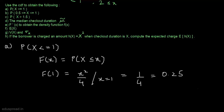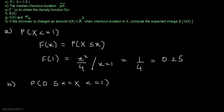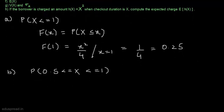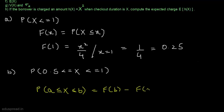Let's move to part B. In part B, we have to find the probability that X is between 0.5 and 1, that is X is greater than or equal to 0.5 and less than or equal to 1. We know that X is a continuous random variable, and for continuous random variables we have the proposition: P(A ≤ X ≤ B) = F(B) − F(A).